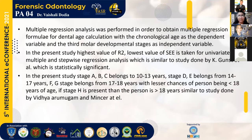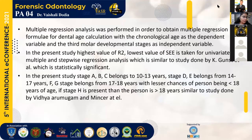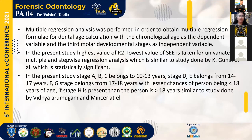The present study shows the highest R-square value and lowest standard error of estimation for univariate, multiple, and stepwise regression analyses, similar to the study by K. Gunst. The conclusion is that the mean age model can be applied to the Gujarati population, as it shows a standard deviation of ±0.17 to ±1.99 between actual and estimated age, which is statistically significant. Stages A, B, and C correspond to the 10–13 years age group; D and E to 14–17 years; F and G to 17–18 years; and if Stage H is present, the person is above 18 years.